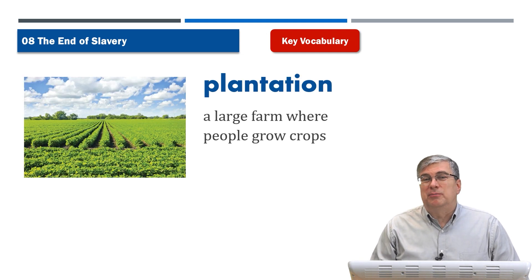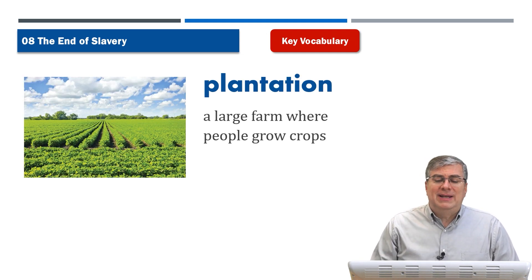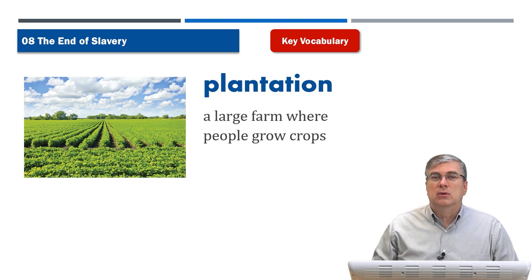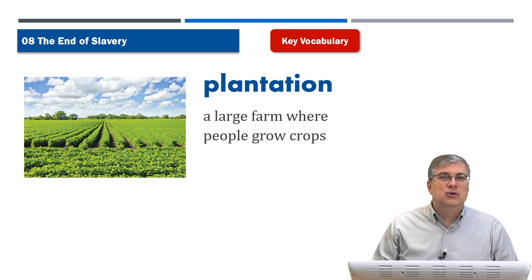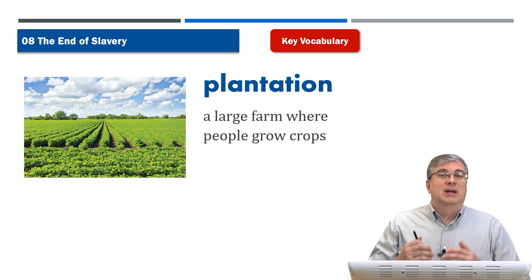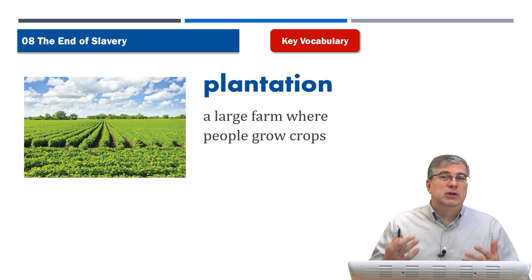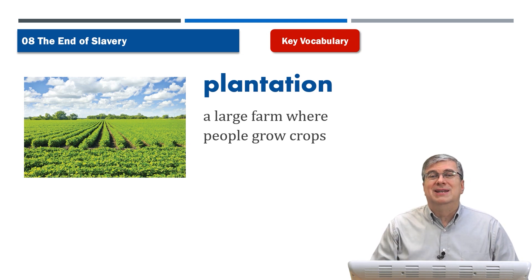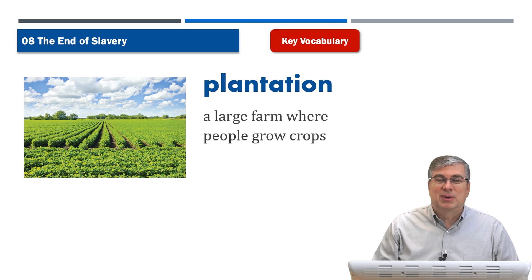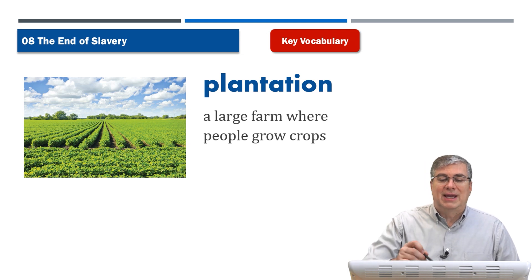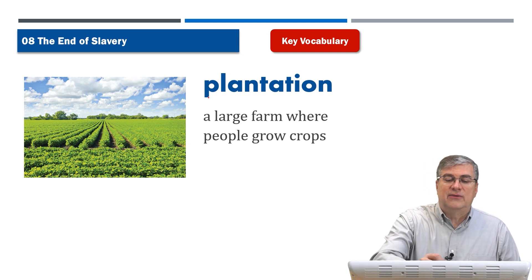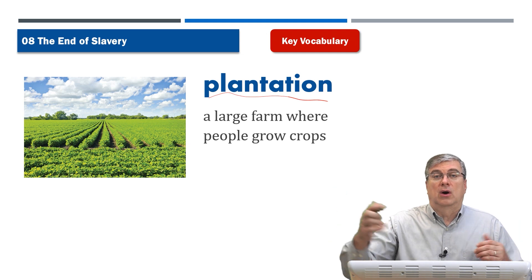Next, we have plantation. A plantation is a large farm where people grow crops. Plantations were usually in the southern part of America, where the climate was very warm and it was good for growing many different types of crops, especially cotton. So a plantation is like a very big farm.